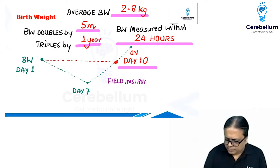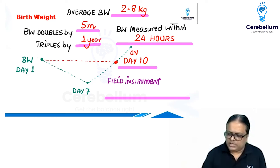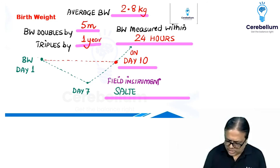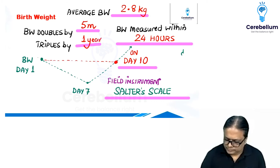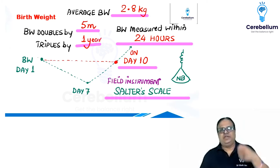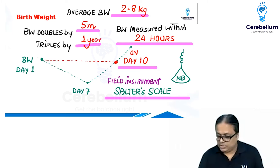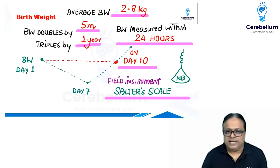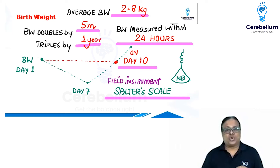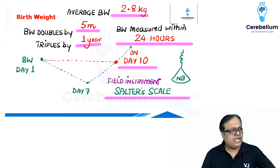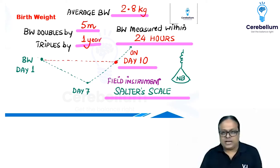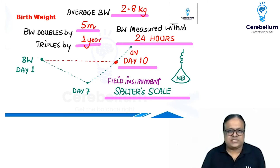What is the field instrument to record birth weight? In hospitals you have digital electronic weighing scales, but not in a village setting. In the field it is the Salter scale — a spring balance. The newborn is placed in a sling and weighed, similar to how a shopkeeper weighs goods. The Salter scale has been asked as an image-based question in the FMG exam. Pink-underlined items indicate questions asked in FMG papers.